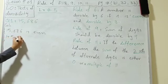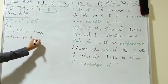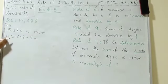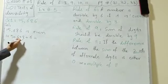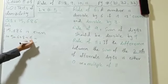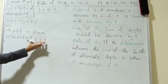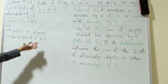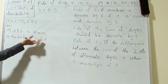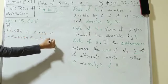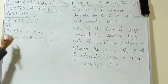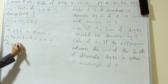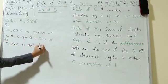For divisibility by 3, we add all the digits: 1 plus 5 plus 6 plus 8 plus 6. That gives 1 plus 5 equals 6, plus 6 equals 12, plus 8 equals 20, plus 6 equals 26. Since 26 does not appear in the 3 times table, it is not divisible by 3. So 15,686 is not divisible by 6.